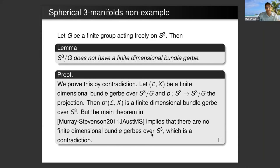Then we can lift this bundle gerbe to be a finite dimensional bundle gerbe over the 3-sphere, but the main result in a paper by Murray and Stevenson in 2011 implies that there are no finite dimensional bundle gerbes over the 3-sphere, and hence we get a contradiction. I wanted to talk about other examples of 3-manifolds which had finite dimensional bundle gerbes, but I've run out of time, so I think I'll end here. Thank you for listening.